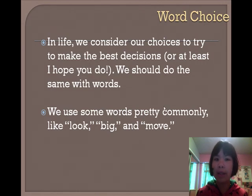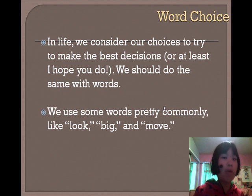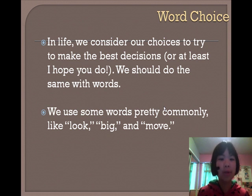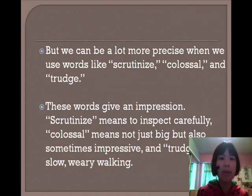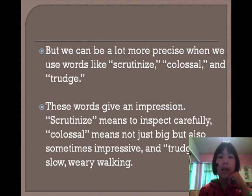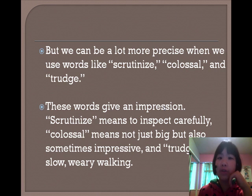Word choice. In life, we consider our choices to try to make the best decision. We should try to do the same with words. We use some words pretty commonly, like "look," "big," and "move." We can be a lot more precise when we use words like "scrutinize," "colossal," and "trudge." These words really give an impression. Scrutinize means to inspect carefully. Colossal means not just big, but also sometimes impressive. And trudging is slow, weary walking.